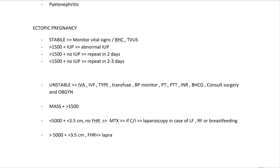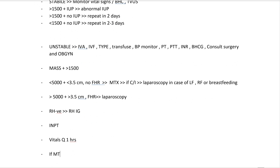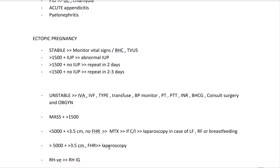Start with laparoscopy; laparotomy is a fallback if needed. If the patient is RH negative, give RH immunoglobulin. This is inpatient management — monitor vital signs every one hour. If methotrexate is given, follow up in four days to monitor beta HCG.